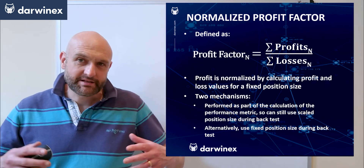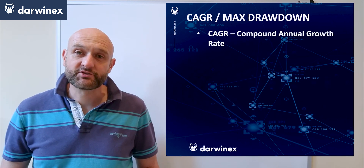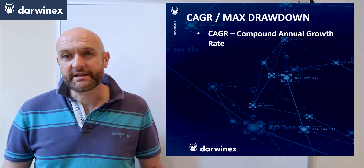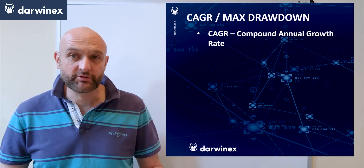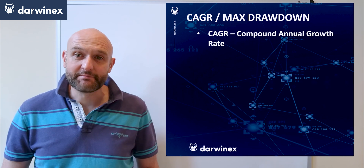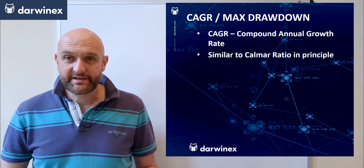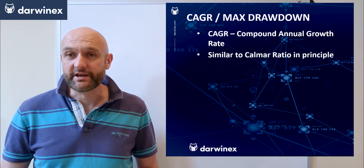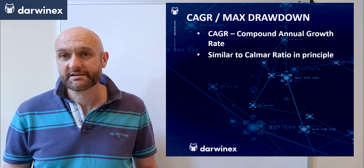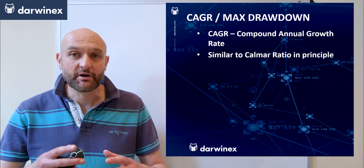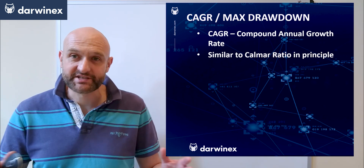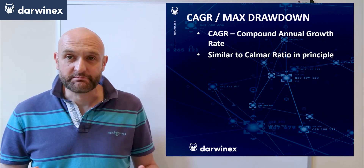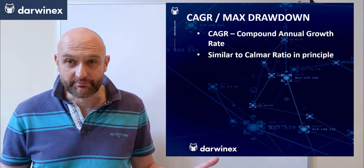Now let's move on to a performance metric that I prefer over profit factor, which is the compound annual growth rate divided by the maximum drawdown. This is actually very similar to the Calmar ratio — the only difference is that the Calmar ratio is always performed over a set period of time, whereas this metric can be based on any backtest time frame.